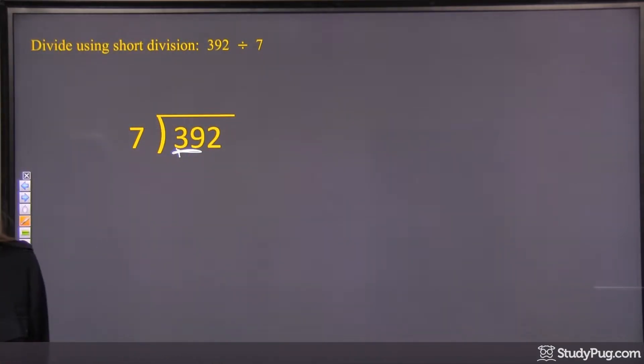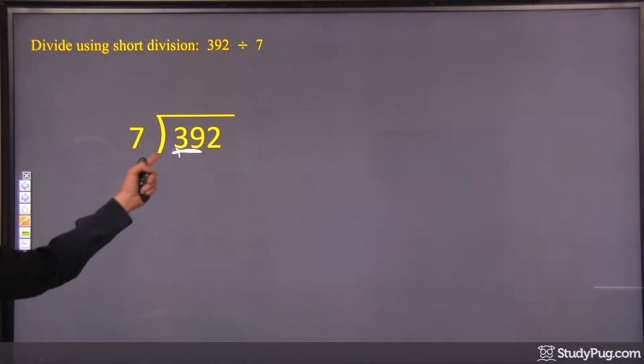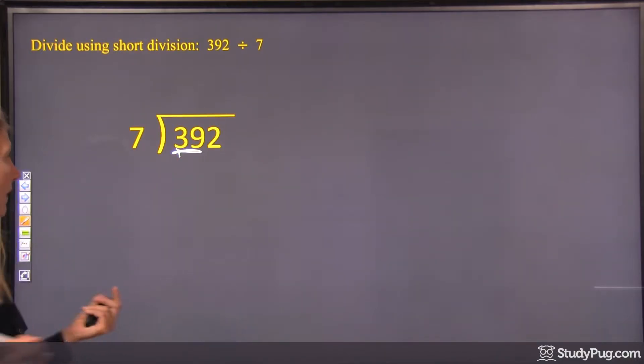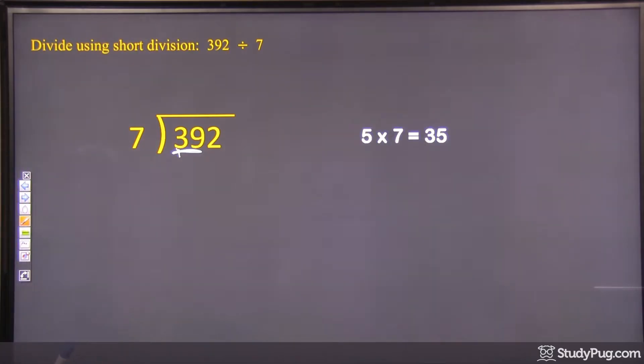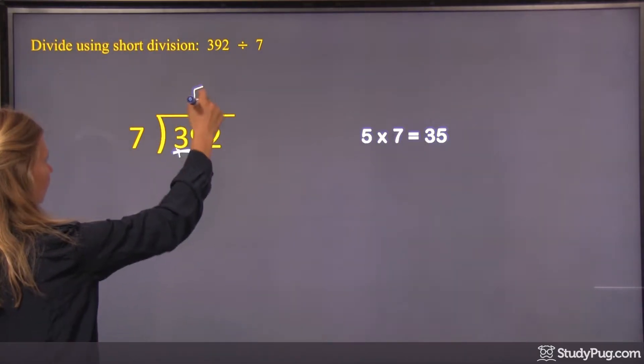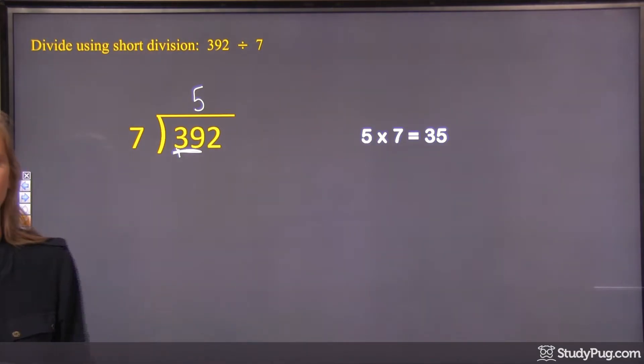7 times 5 is 35. 7 times 6 is 42. Okay, so 42 is too big, so 7 times 6 is too many, so we'll have to do 7 times 5. So we'll put the 5 there, and 5 times 7 is 35.